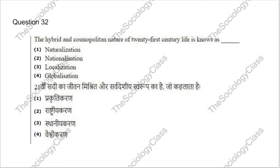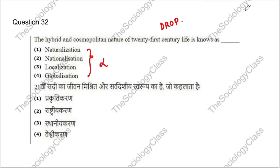Question 32: The hybrid and cosmopolitan nature of 21st century life is known as — this question has a problem. I searched a lot and could not find such a term, and the options given are also incorrect. CUET dropped this question, so everyone got marks regardless of their answer. We will skip this question.